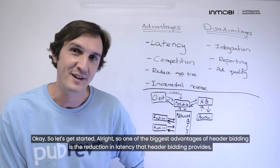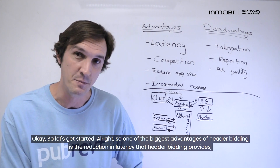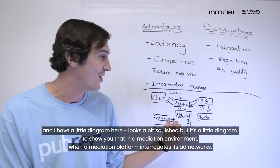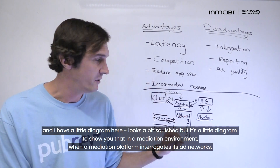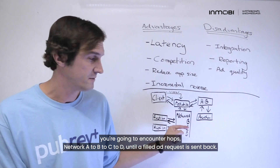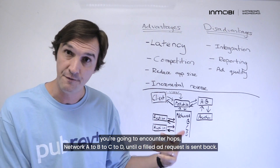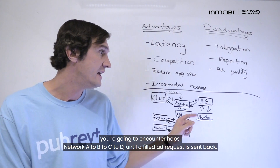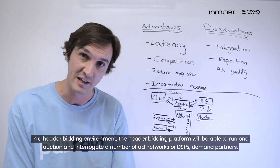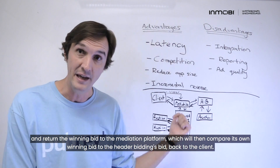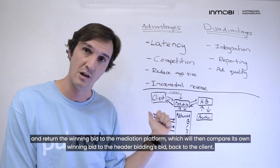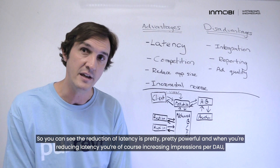One of the biggest advantages of header bidding is the reduction in latency. I have a little diagram here — it looks a bit squished — to show you that in a mediation environment, when a mediation platform interrogates its ad networks, you're going to encounter hops: network A to B to C to D until a filled ad request is sent back. In a header bidding environment, the platform runs one auction and interrogates a number of ad networks or DSPs — demand partners — and returns the winning bid to the mediation platform, which then compares its own winning bid to the header bidding's bid back to the client.